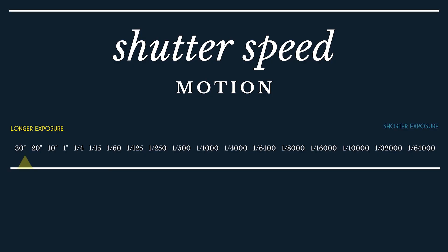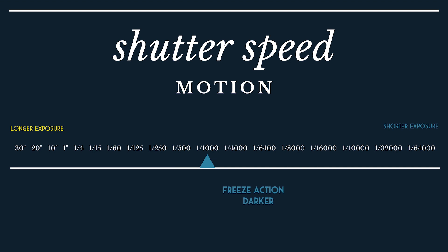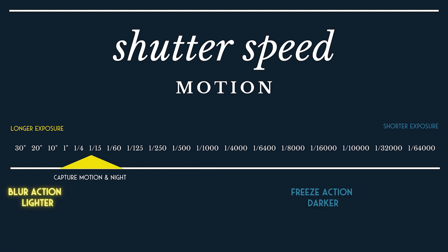When you set your shutter speed, you're working with motion. If you're taking pictures of something moving — like a speeding car on a highway — a shutter speed of 1/30 gives you a longer exposure and blurred action. If you have a shutter speed of 1/1000, you have a shorter exposure and the action will be frozen.